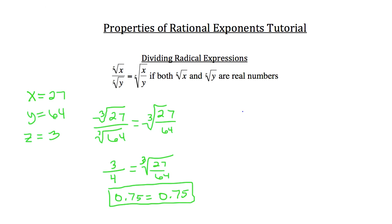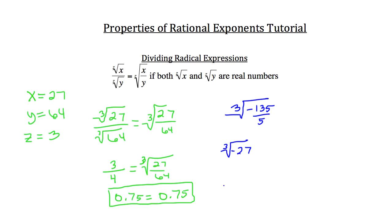Let's try one more example. What if you were given the cubed root of negative 135 over 5? We could break that down using our generic expression for dividing radical expressions. The cubed root of negative 135 over 5 simplifies — negative 135 over 5 reduces to negative 27. The cube root of negative 27 is going to be negative, because we have an odd index and a negative radicand, and the cube root of 27 is 3. So our answer here would be negative 3.